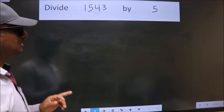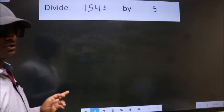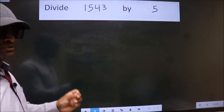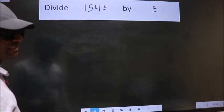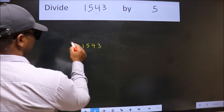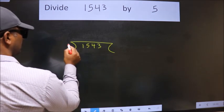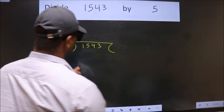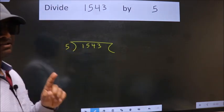Divide 1543 by 5. To do this division, we should frame it in this way. 1543 here, 5 here. This is your step 1.